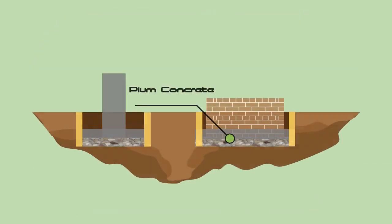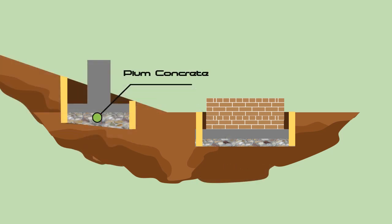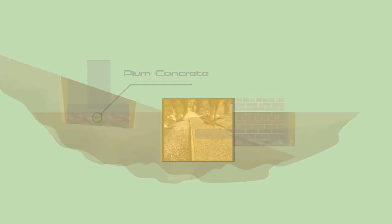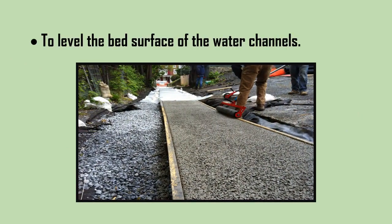This type of concrete is mainly used to level the ground below the foundation and to level the surface in the places of sloping ground. The other common uses of plum concrete are to level the bed surface of the water channels.